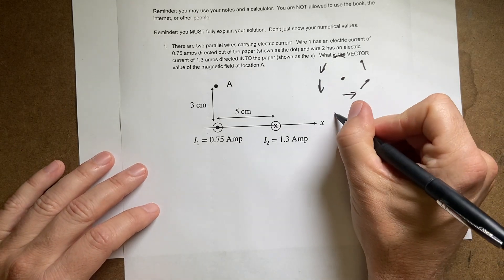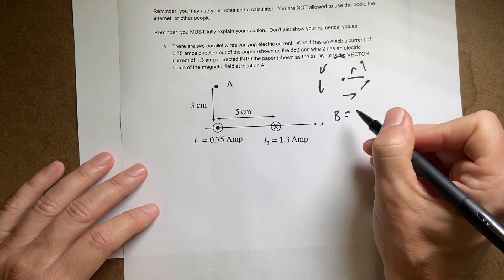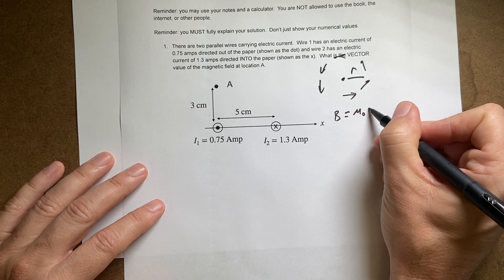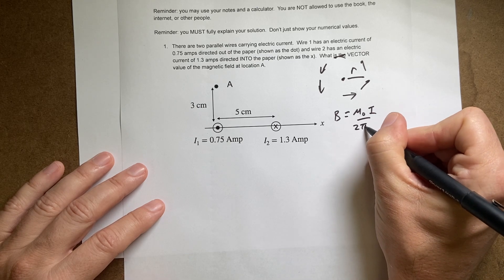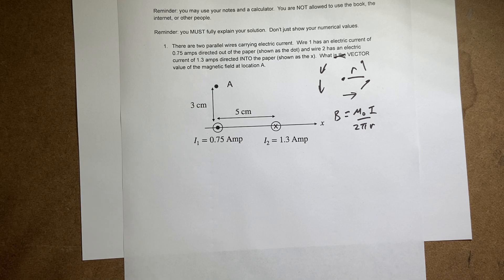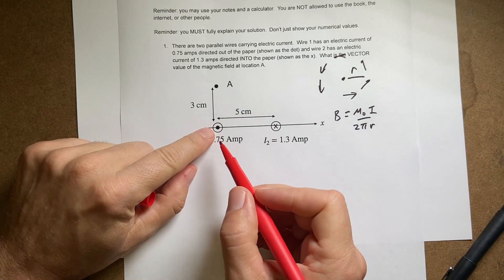The other thing I need to know is the magnitude of this magnetic field depends on the distance. We can find the magnitude as μ₀I/(2πr). So I can find the magnitude for both of these, I can find the direction for both of these, and I can add them up as vectors.